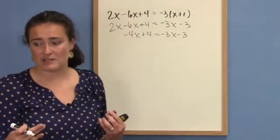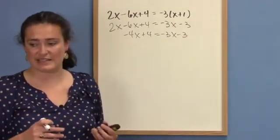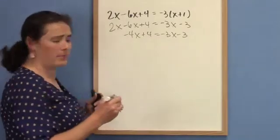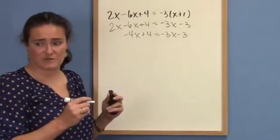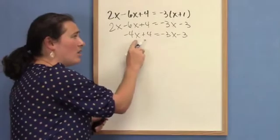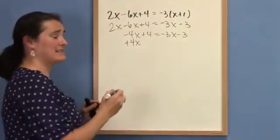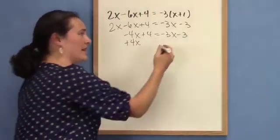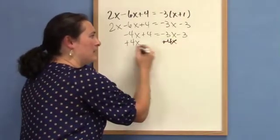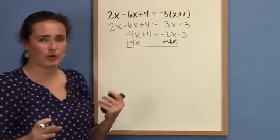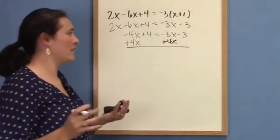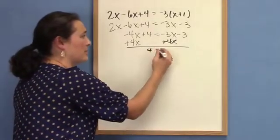So the next thing I might want to do is get all the constants on one side of the equation. I want to get all of these x's on the same side of the equal sign. So what I'm going to do is add 4x to both sides, which is going to give me 0x here. And I'm allowed to do that. I'm allowed to add the same thing to both sides of an equation. That's called the addition property of equality.